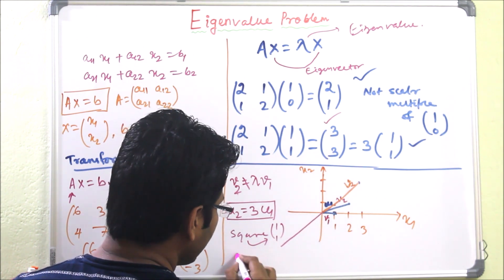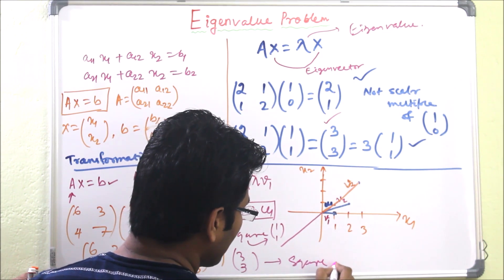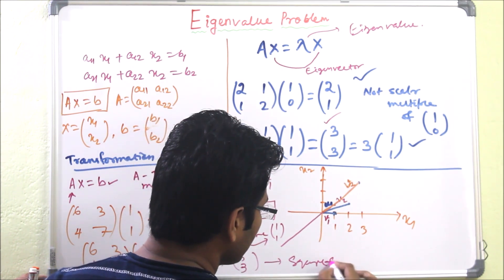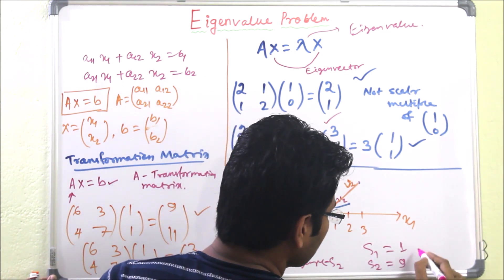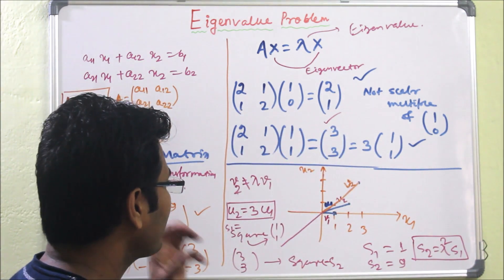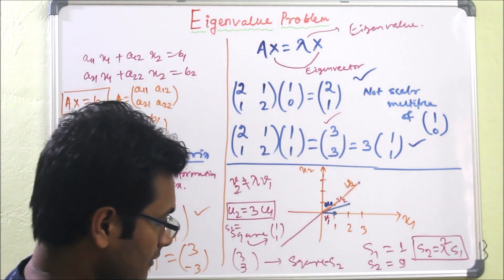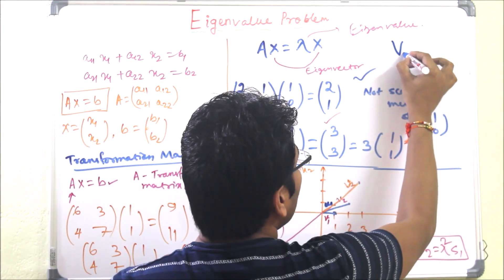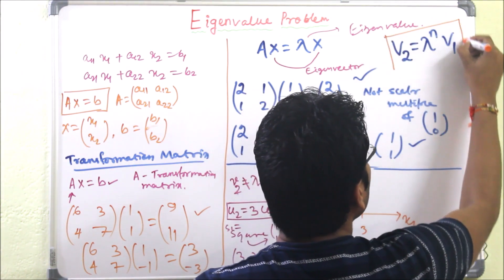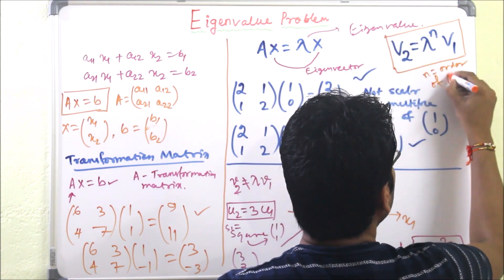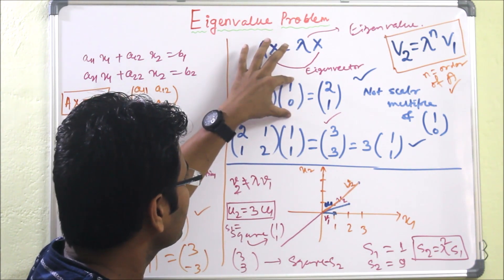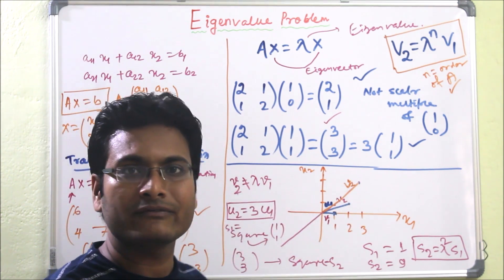After transformation, [1, 1] becomes [3, 3]. Both represent squares: the first has area s1 = 1, and the second has area s2 = 3 × 3 = 9. So s2 = λ² × s1. In general, if the order of A is n, then Volume_v2 = λⁿ × Volume_v1, where n is the number of unknowns and the order of matrix A. That is the geometric meaning of eigenvalues. For any vector other than the eigenvector, the transformed vector will point in a different direction.